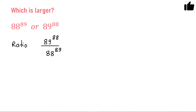Now if this ratio is greater than 1, this means the numerator is greater. Less than 1 means the denominator is greater. Equal to 1 means both numbers are equal. That is the idea to solve this problem.